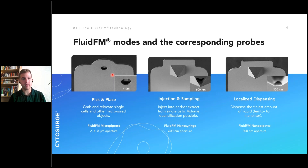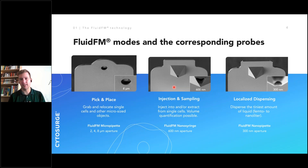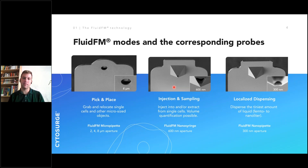This is what we call the pick-and-place application — we can pick up cells and put them somewhere else, or while we pick up the cells we can measure force curves. In the middle we have the FluidFM nanosyringe, which is the type we use most in cutting-edge applications. It is a syringe that we can use to pierce a cell's membrane — either just the cell membrane or also the nuclear membrane.